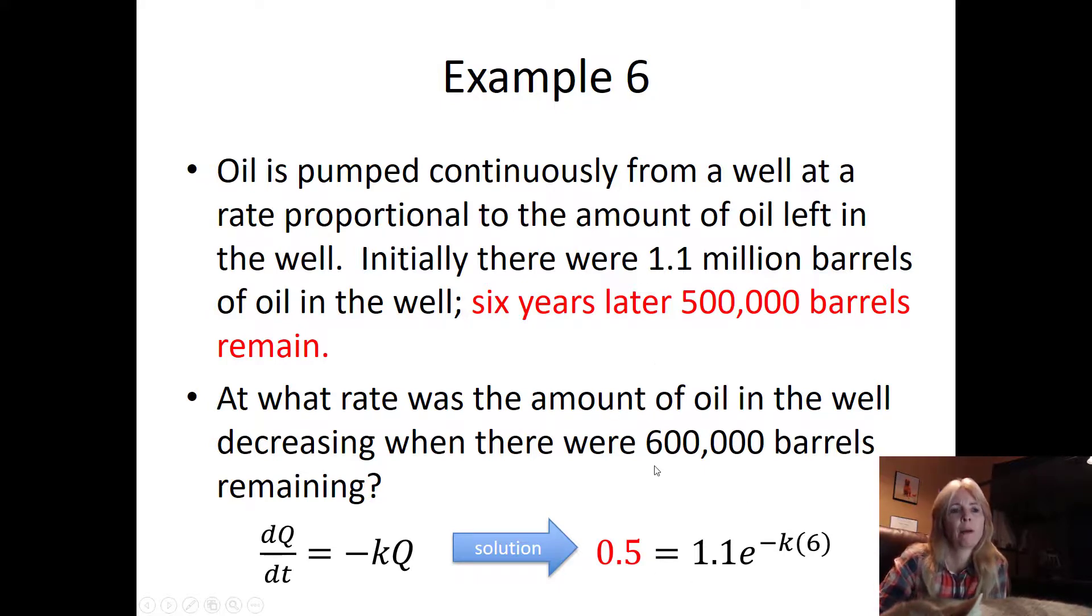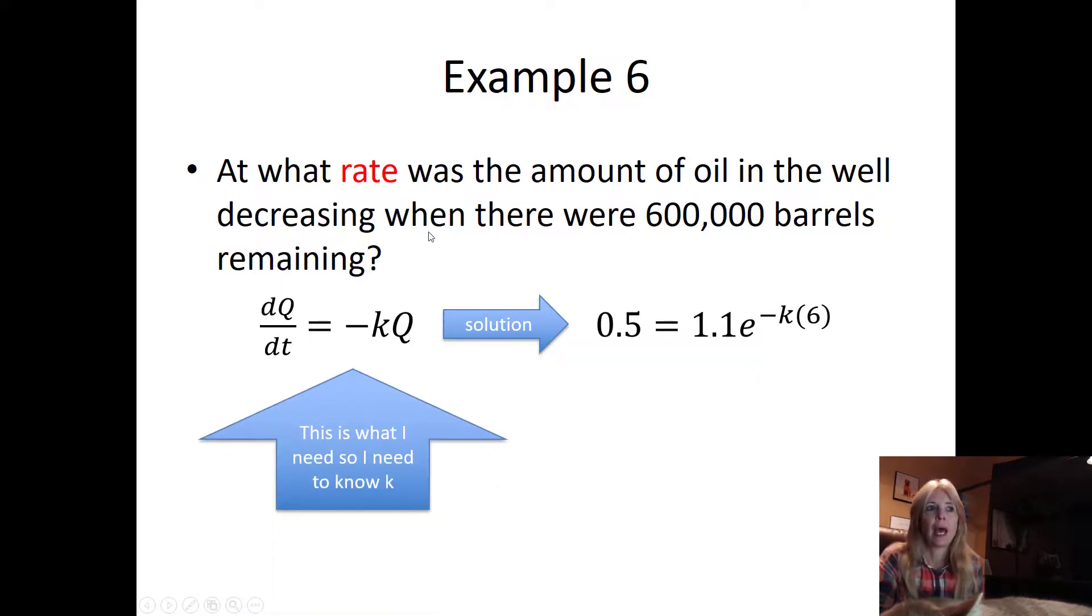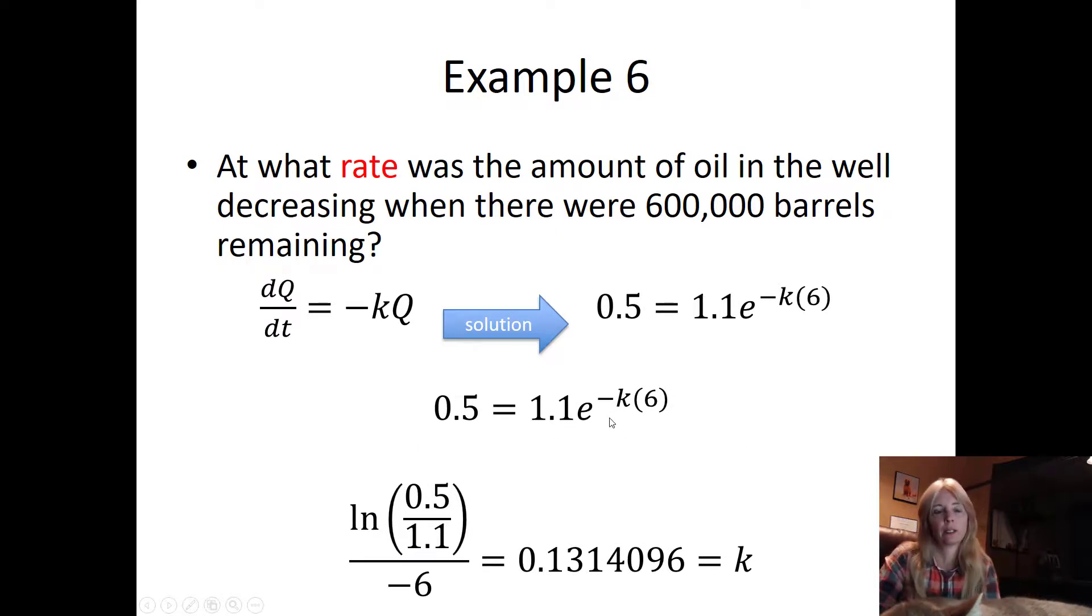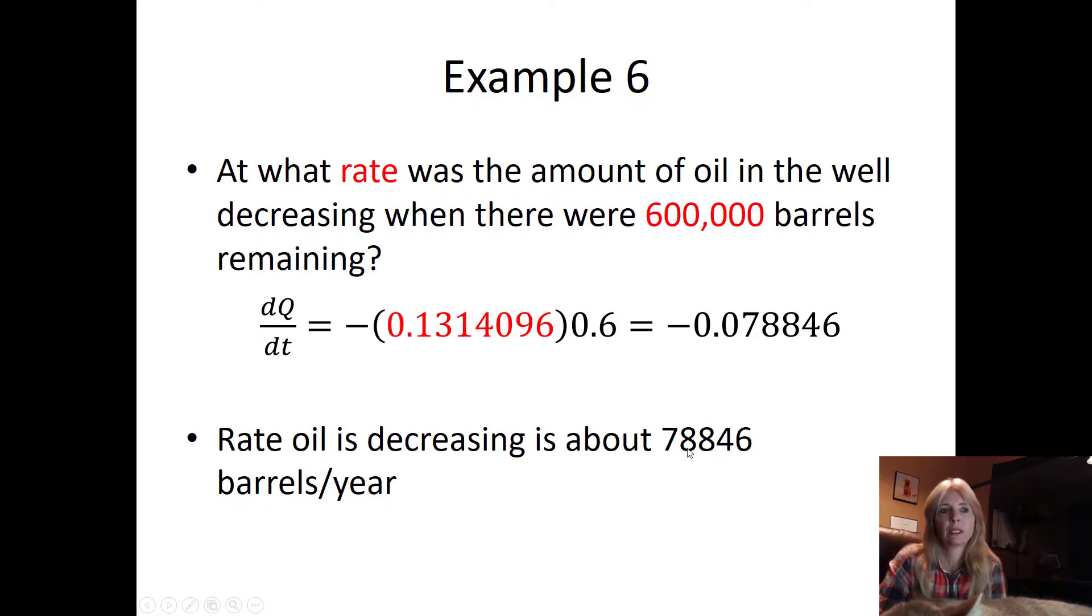At what rate was the amount of oil in the well decreasing when there were 600,000 barrels remaining? Here you need to be careful because everything we've been doing is plugging stuff in over here, but I really need this 'at what rate,' so this is actually my rate that I'm looking at. I have to figure out what k equals. I have something over here that I can solve for k. Go through all those steps we've been doing; you can see all these problems are the same. I find out what k equals. I take this amount and plug it in, and then it says 600,000 barrels remain, so I multiply it by that 600,000 barrels and I get my answer. The rate oil is decreasing is about 78,846 barrels per year.